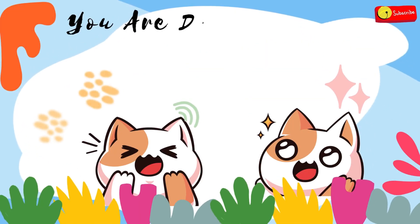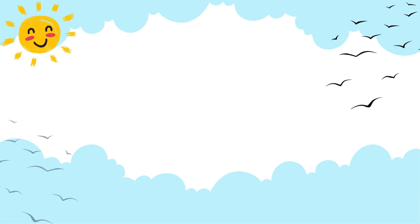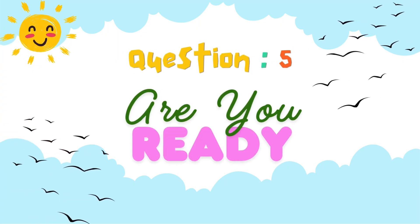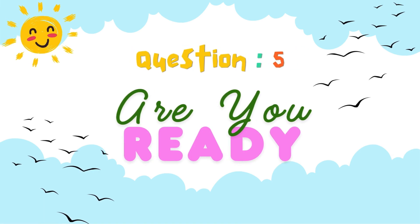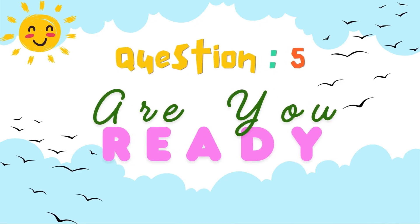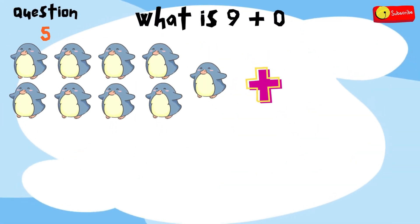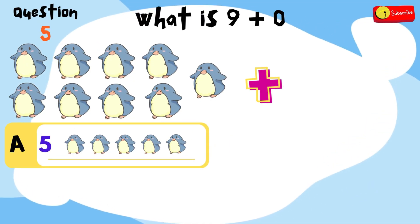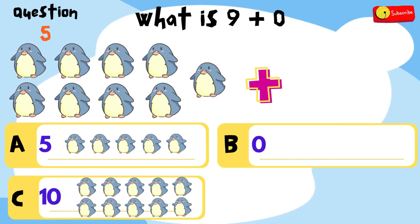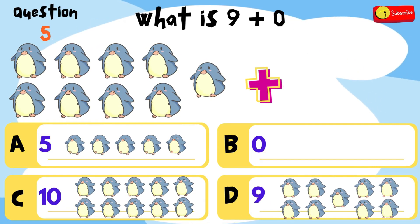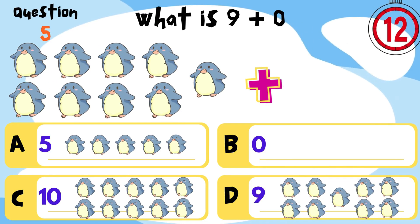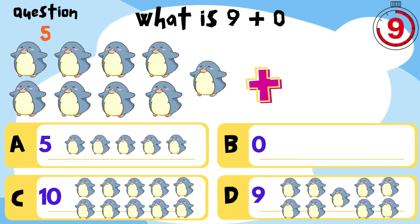You're doing amazing! Let's see what's next. Let's jump into question five — are you ready? Put on your thinking caps and let's go! What is 9 plus 0? Is it A, 5? B, 0? C, 10? Or D, 9? You have 12 seconds to think and choose. Press the pause button if you need more time to think.